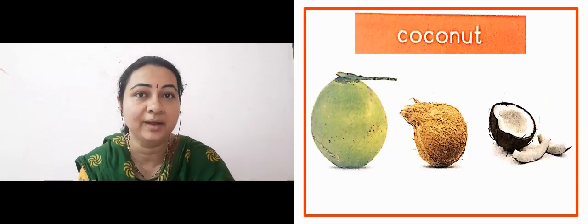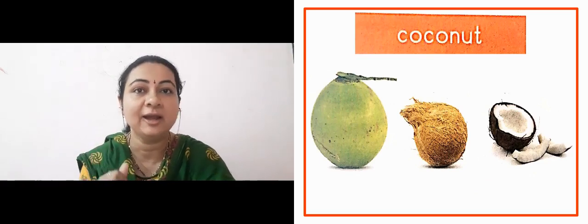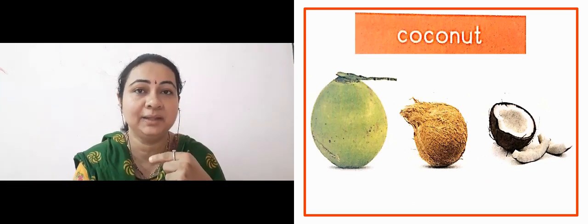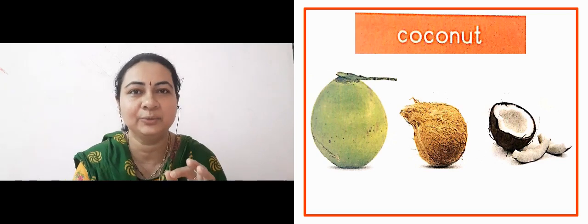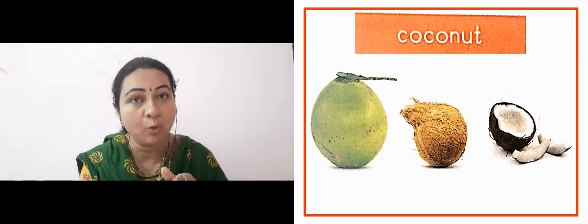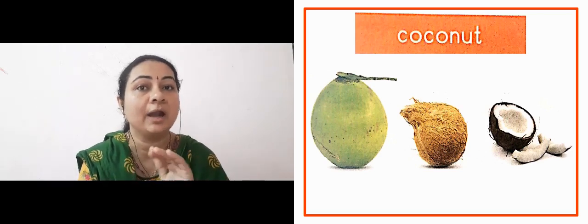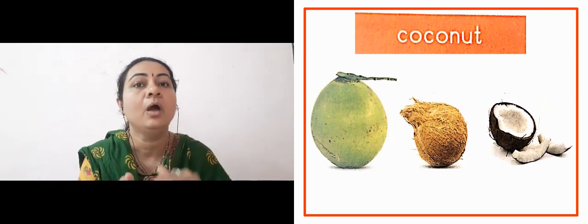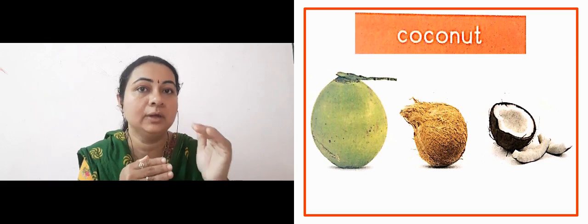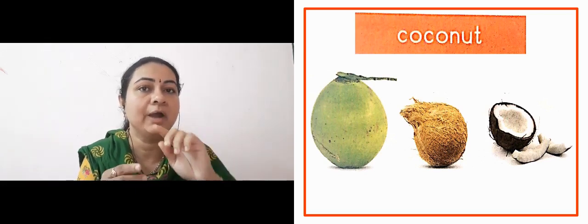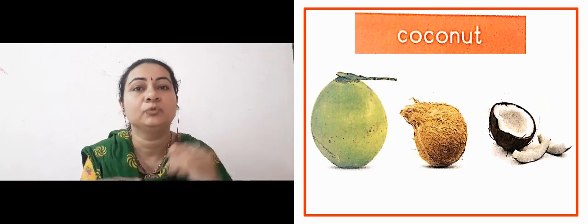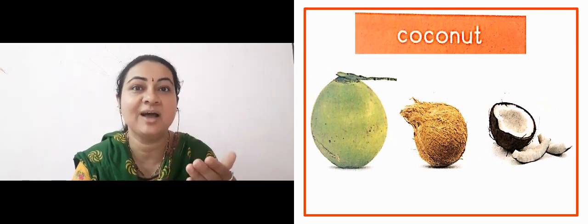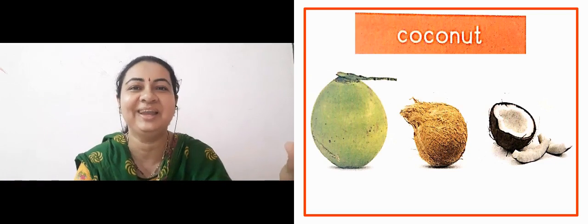The next lady is showing us coconut. The green coconut is shown — you drink coconut water by cutting it, and it is very healthy. Another one is shown in brown color — that is dry coconut. The inside shell is white color and the skin is brown color. It is used to make chutney and also as prasad. You must have definitely seen this.